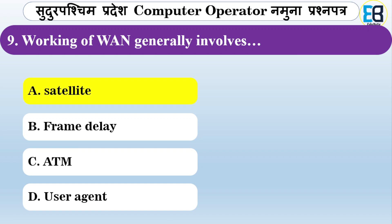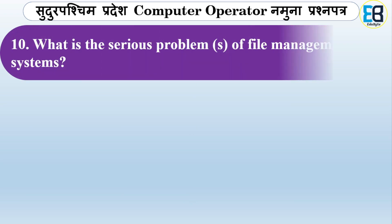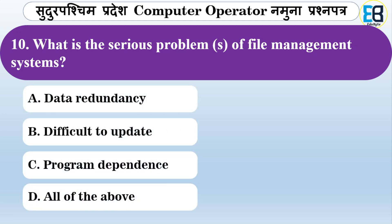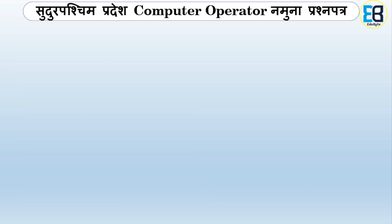What are the serious problems of a file management system? Options include data redundancy, difficulty to update, program dependence, or all of the above. The correct answer is all of the above — all are serious problems of a file management system.